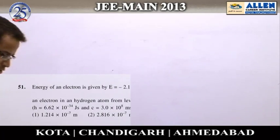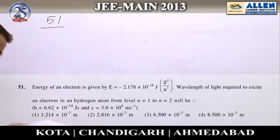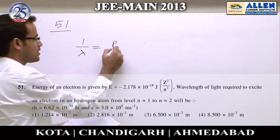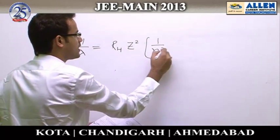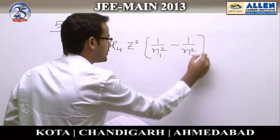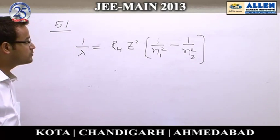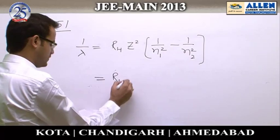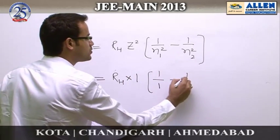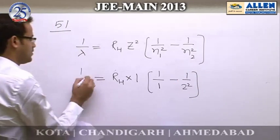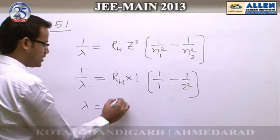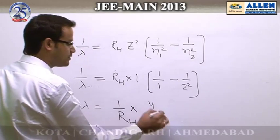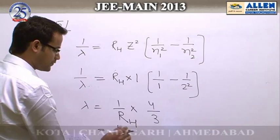Question number 51: According to the Rydberg equation — 1/λ = R_H × Z² × (1/N₁² − 1/N₂²) — to calculate the wavelength of light required to excite the electron from n=1 to n=2, for a hydrogen atom Z=1, solving the equation gives 1/λ = R_H × (4/3), so 1/λ = (1/R_H) × (4/3).